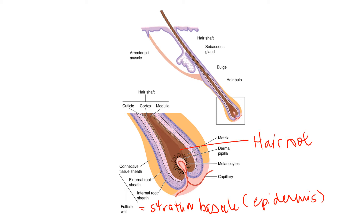You can pluck hairs out by their roots and they'll grow back. But it is the stratum basale which forms that follicle that has to be damaged — and that can be done through something like electrolysis, or even repeated plucking of hairs can cause damage so that the hair may not grow back. The portion inside is called the hair root, and the fattened end is the hair bulb. If the root is damaged, another root can grow back as long as that follicle is intact.